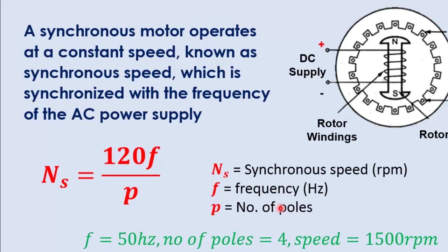For example, if we have 50 Hz frequency and number of poles is 4, then synchronous speed or rotor speed is 1500 RPM.